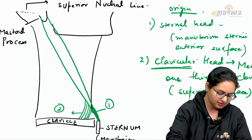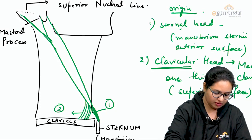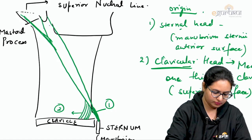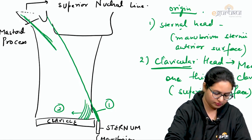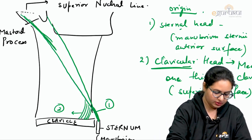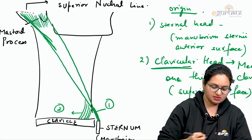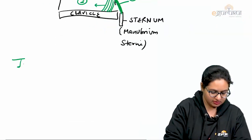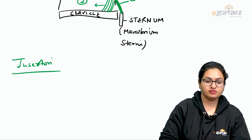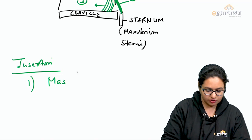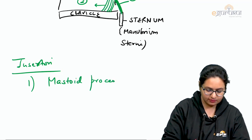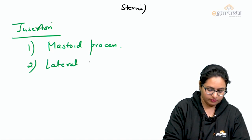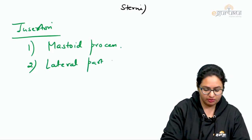Regarding the insertion of this muscle, the fibers insert into the outer surface of the mastoid process. The fibers also extend posteriorly towards the superior nuchal line. So the insertion is: first, into the outer surface of the mastoid process, and secondly, onto the lateral part — the lateral one-third — of the superior nuchal line.